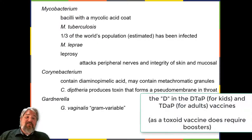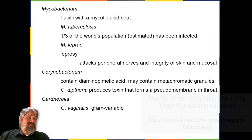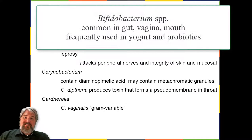C. diphtheriae produces a toxin that forms a pseudomembrane in the patient's throat, causing swelling, difficulty breathing, and other symptoms that can become serious if untreated.